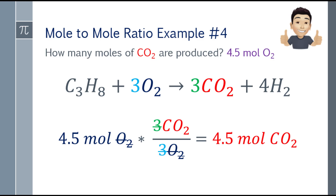Substituting: 4.5 moles of oxygen multiplied by the coefficient of the wanted (3CO2), over the coefficient of the given (3O2). The two 3s and the O2 cancel out. So 4.5 times 1 CO2 equals 4.5 moles of CO2. The answer to 'how many moles of CO2 are produced?' is 4.5 moles.